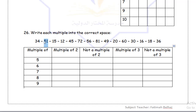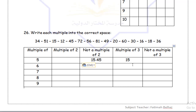Let's move on to 15. Is 15 a multiple of 5? Yes. So I'm going to place it there. Is it a multiple of 2? No, it's an odd number. Is it a multiple of 3? Yes, I'll write it there. Is it a multiple of 6, 7, 8, or 9? No. Moving on to 45 — is it a multiple of 5? Yes. A multiple of 2? No, it's not. So I'll place it next to 15. Is it a multiple of 3? Yes. Is it a multiple of 9? Yes, not a multiple of 2, but a multiple of 3.